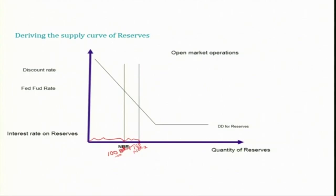Suppose they reduce the open market purchase of government securities — then reserve will be declining, for example to NBR3. So instead of open market purchase, if they do open market sale, they will be reducing reserve with the banking system. In this case, let us now see how the rate of interest will be determined.